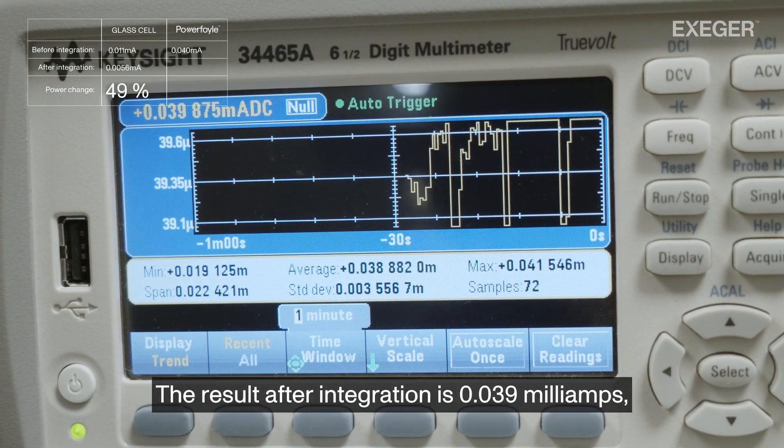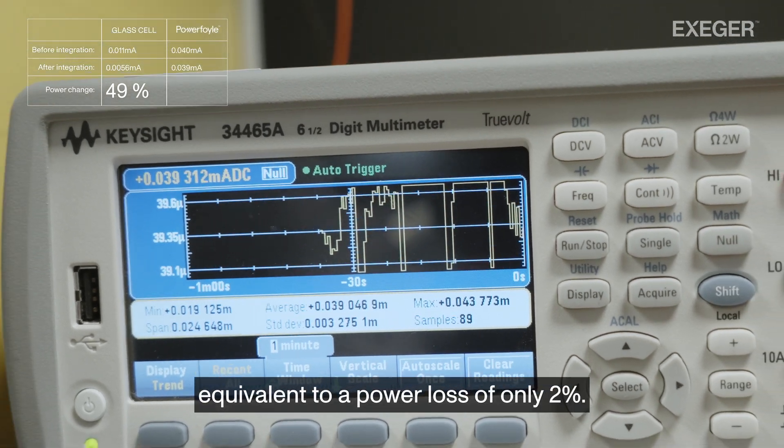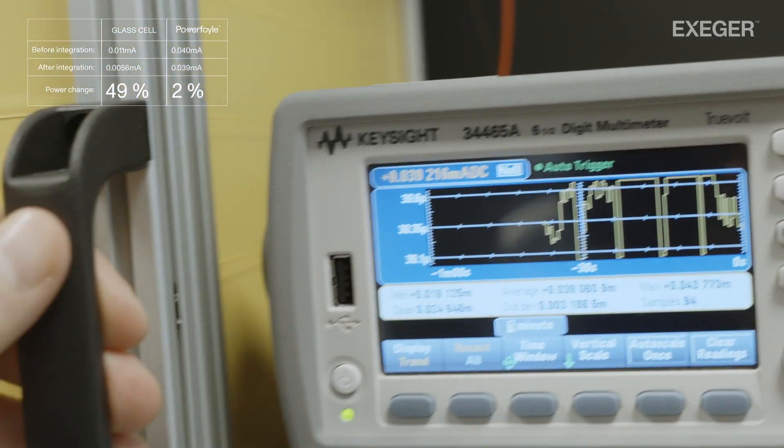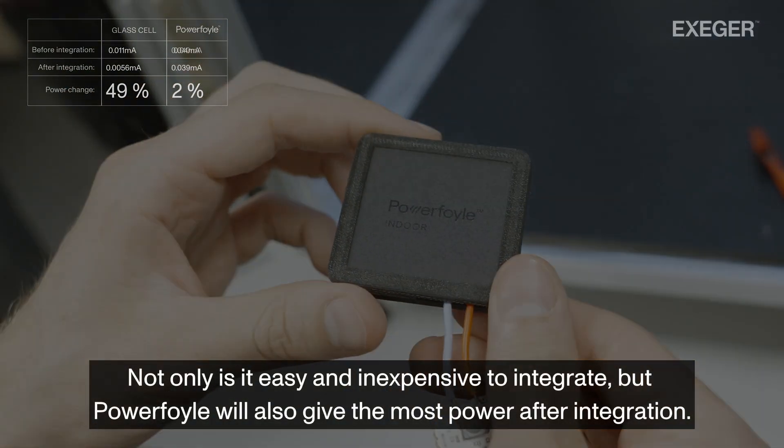The result after integration is 0.039 milliamps, equivalent to a power loss of only 2%. Not only is it easy and inexpensive to integrate, but Powerfoyle will also give the most power after integration.